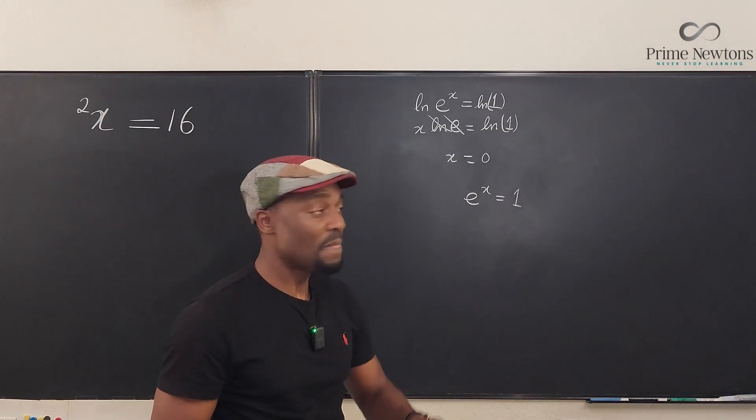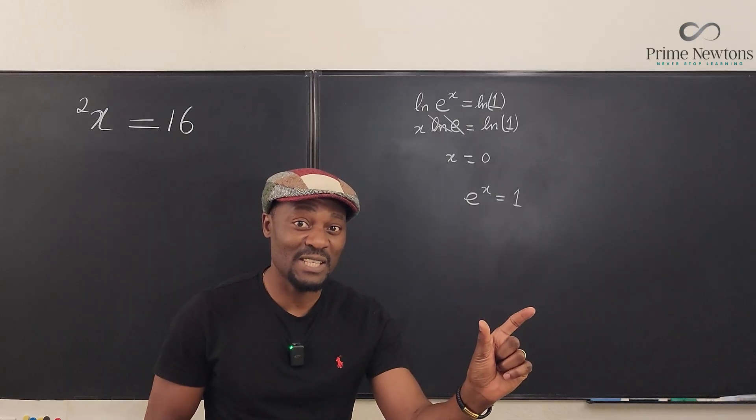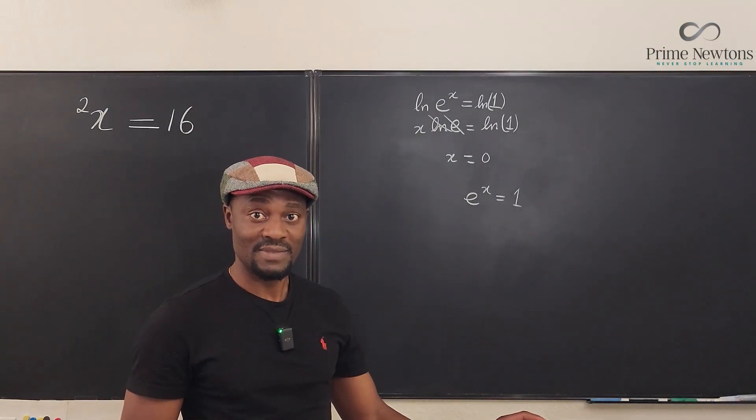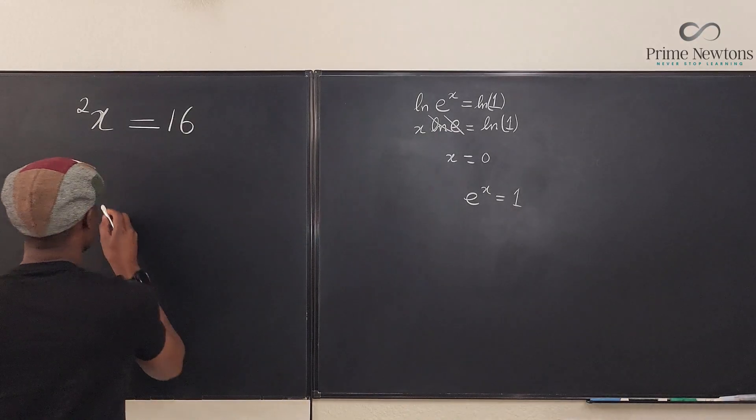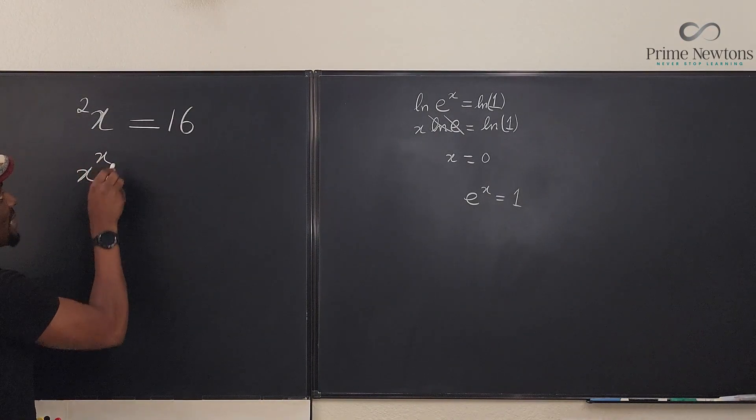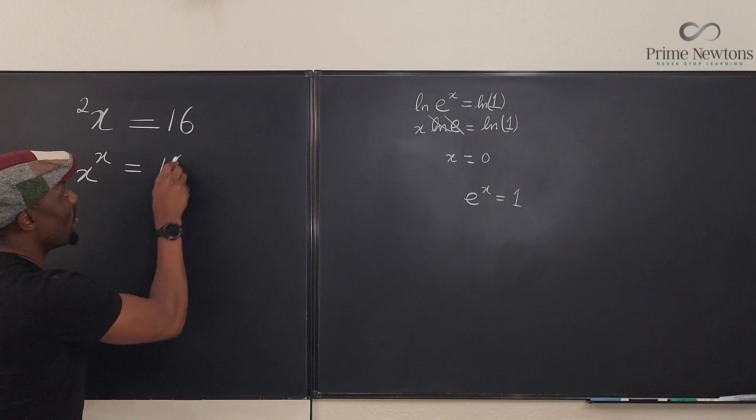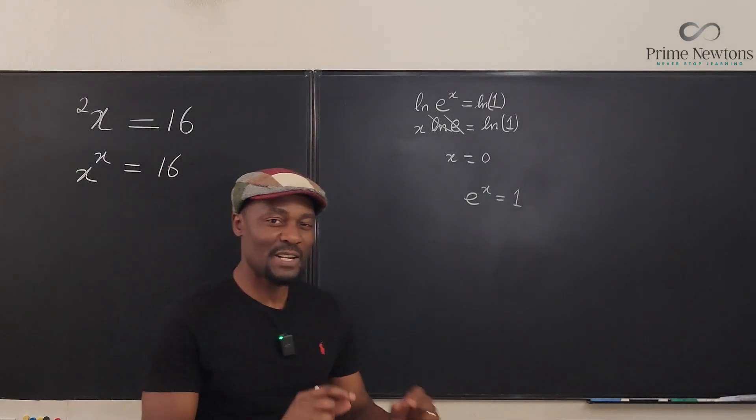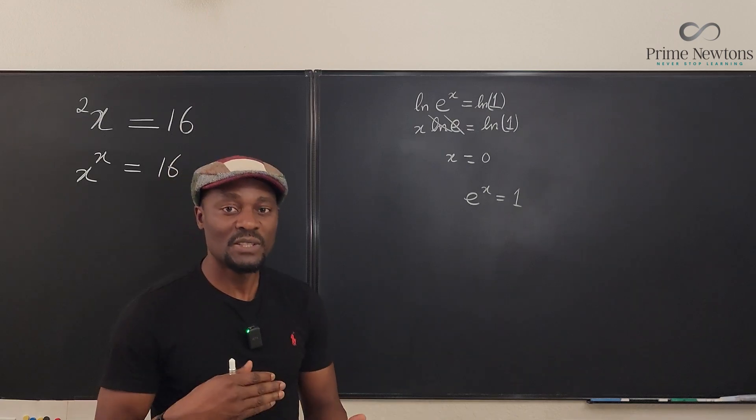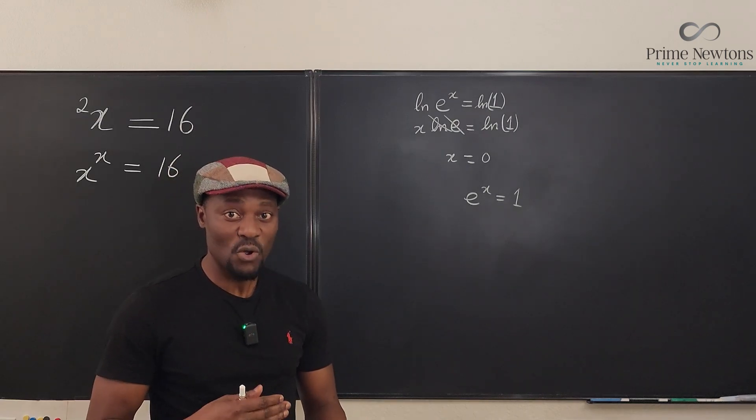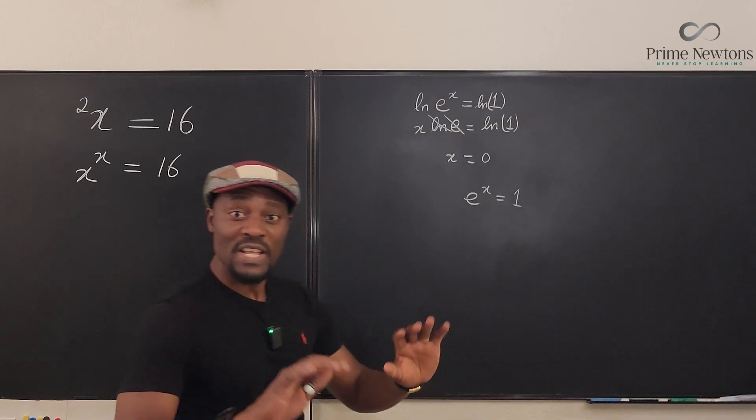But there are times where the x you're solving for is not just the exponent. It is both the exponent and also in the base, and that is the case we have here, because the problem you have here is actually the base raised to the exponent. It is present in both the exponent and the base. Therefore, you will need a special function that is one step higher than the natural log function, and that's what we call the W function, the omega function, or the product log function.